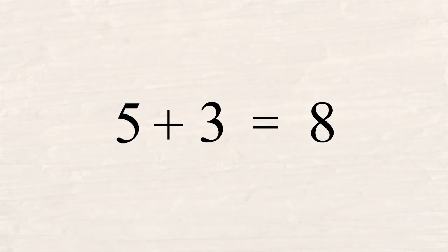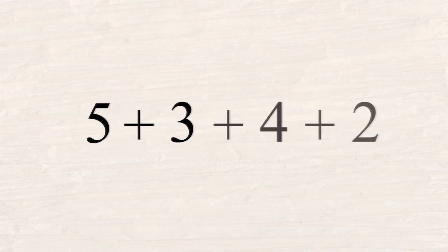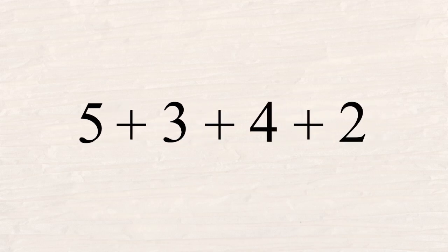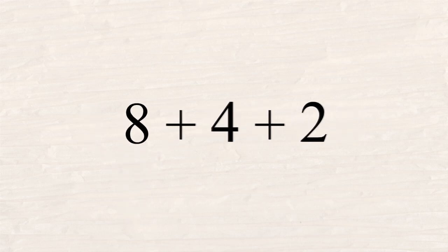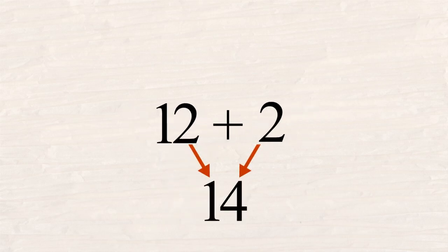Even though addition is defined as a binary operation, you may often see additions involving more than two operands. This is possible because pairs of operands can be added one at a time, with each sum replacing the pair. In this way, an unlimited number of operands can be added sequentially.